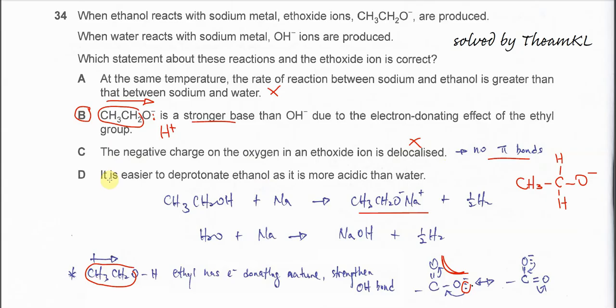Option D: why can't D be correct? It is easier to deprotonate ethanol, meaning it is more acidic than water. I told you just now, to deprotonate ethanol is more difficult. To break the OH bond is more difficult. Therefore, this one is also wrong. Answer confirmed is B. That's all, thank you.